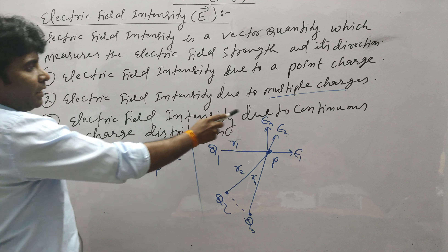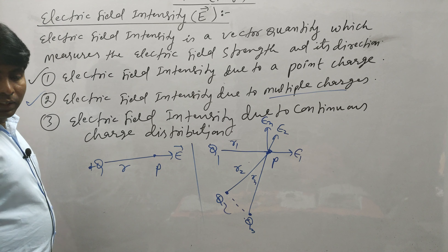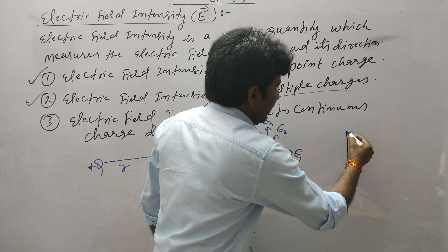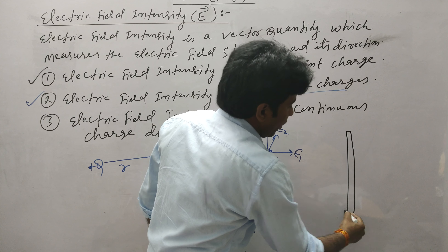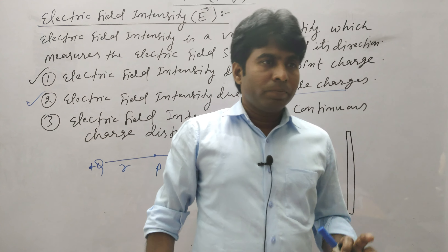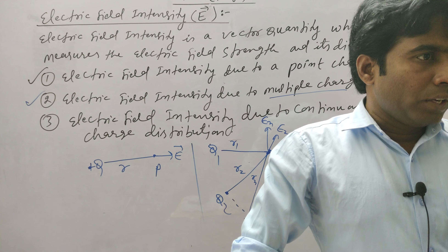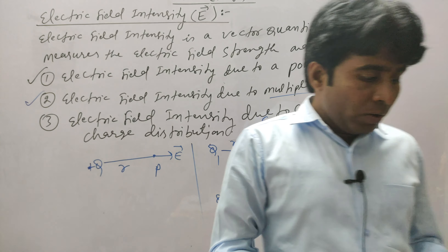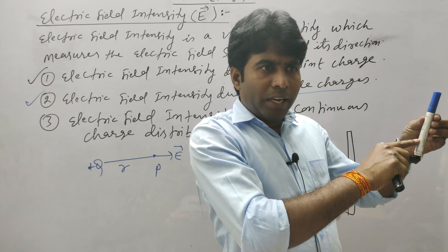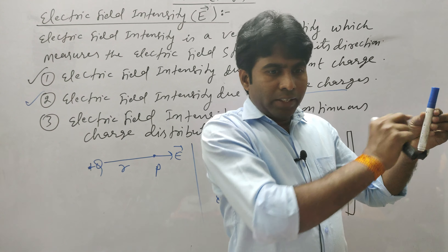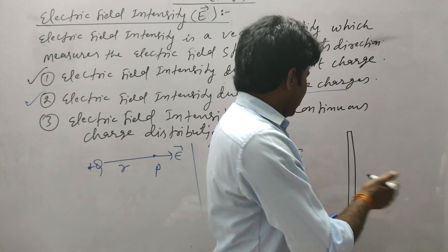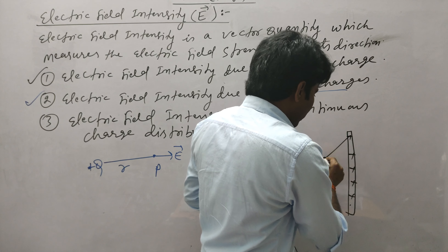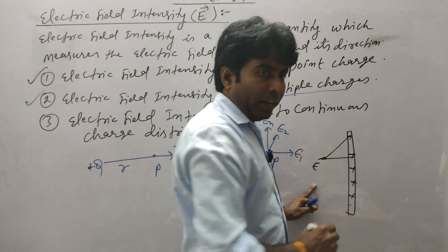Third part: electric field intensity due to continuous charge distribution. In continuous charge distribution, we will study three cases: linear charge distribution, surface charge distribution, and volume charge distribution. Suppose there is a linear charge with positive charges on it. Due to all these charges, we need to find the electric field at a particular point P.